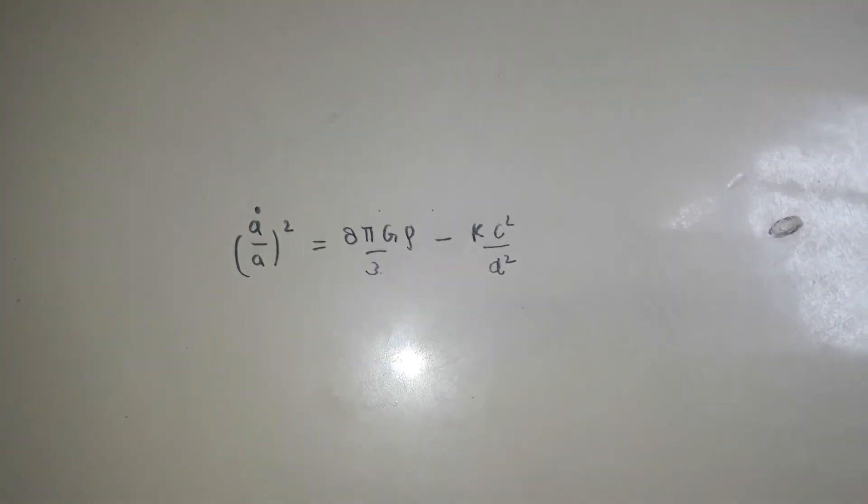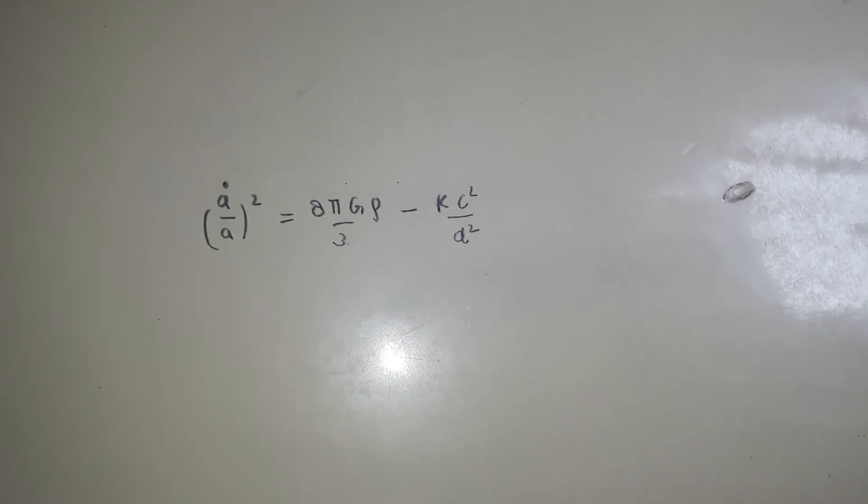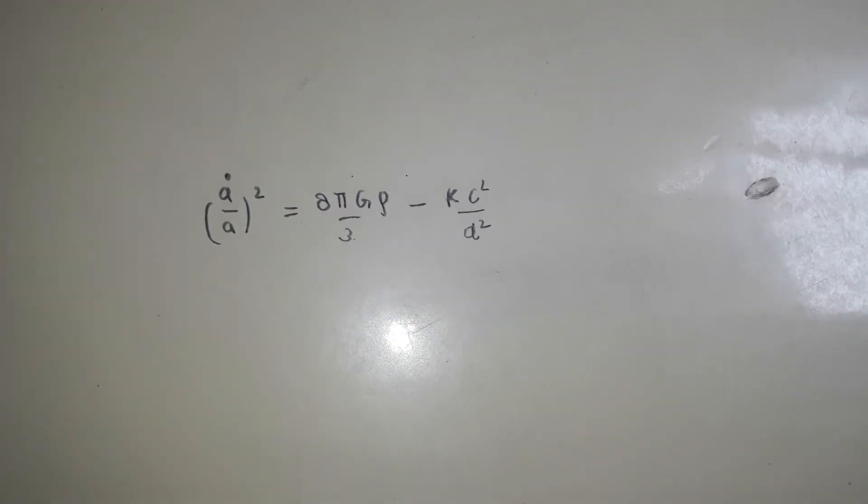We are looking at the famous equation of Alexander Friedmann, and he came up with this equation at the age of 25. This was a revolutionary equation.